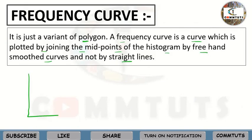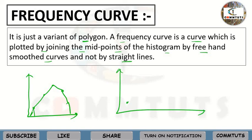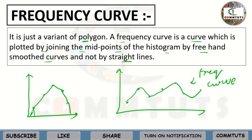For example, here are your plotted points. When you join them with a scale they become your frequency polygon. When you join the same points freehand — making smooth curves — that becomes your frequency curve. So the difference is small: frequency polygon uses straight lines with a scale, while frequency curve uses freehand smooth curves. That is the distinction between frequency polygon and frequency curve.